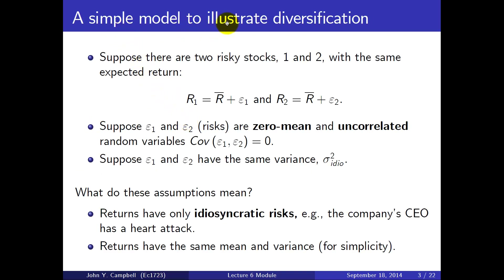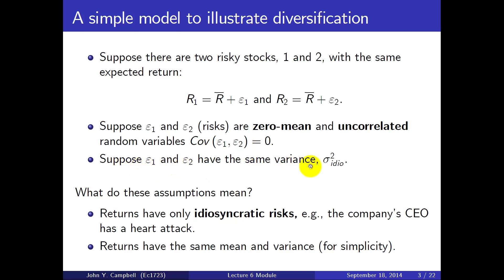Let's do a simple model to illustrate diversification. I'm going to assume there are only two stocks to start with — two risky stocks, call them one and two — and they have the same expected return. The return on the first stock is R-bar plus a shock epsilon-1, the risky component, and the return on stock 2 is the same R-bar plus another shock epsilon-2. These two random variables epsilon-1 and epsilon-2 have zero mean and are uncorrelated with zero covariance. They also have the same variance, which I'll call sigma-squared-idio, where idio stands for idiosyncratic. We're assuming the company's returns have only unique, idiosyncratic risks — for example, the company's CEO having a heart attack, which is independent of whatever happens to another company.